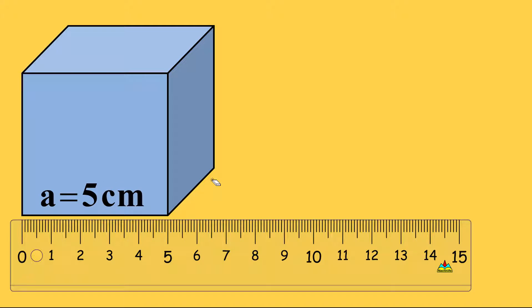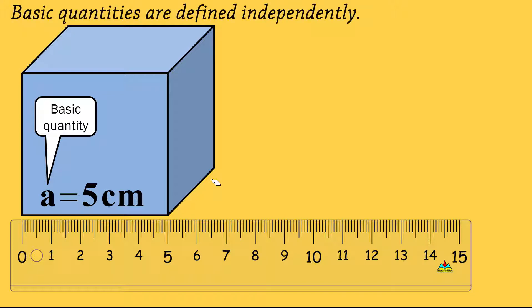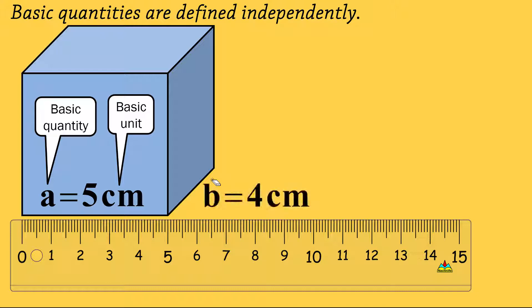Since a expresses a length, it's a basic quantity. We name it basic or fundamental because to understand or define length, I do not need to know what volume, density, or frequency is — it's independent of any other quantity. A basic or fundamental quantity is defined independent of other quantities. Any unit expressing a basic quantity is a basic unit — for example, centimeter, meter, millimeter.